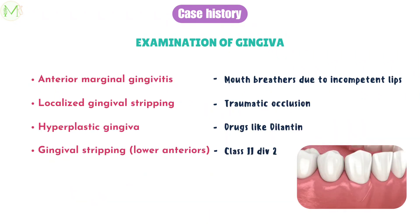Moving on to examination of gingiva. We can see anterior marginal gingivitis in patients who are mouth breathers due to incompetent lips. Also, in traumatic occlusion, we can appreciate localized gingival stripping. When the patient is under drugs like Dilantin, hyperplastic gingiva is visible, and in case of Class 2 Division 2, gingival stripping particularly in the lower anteriors is notable.